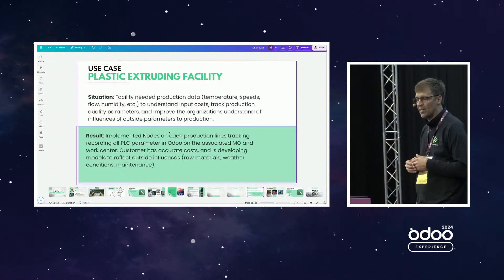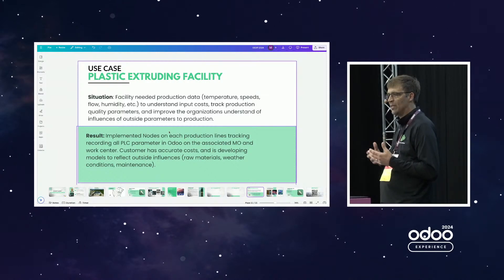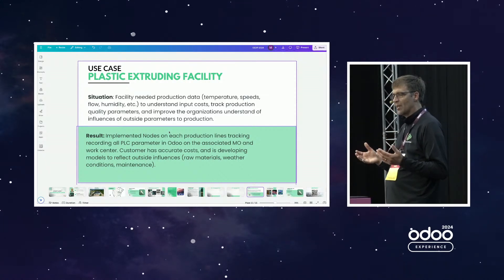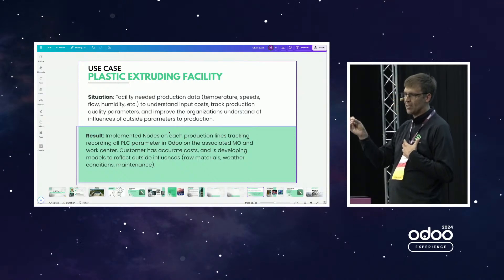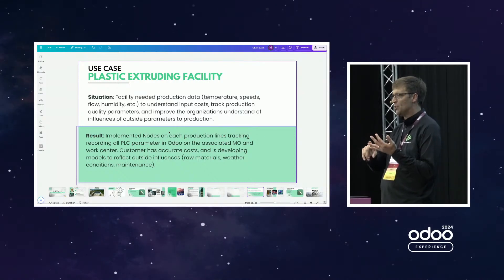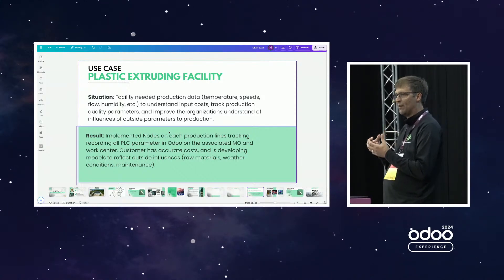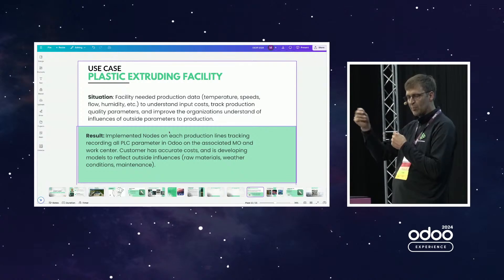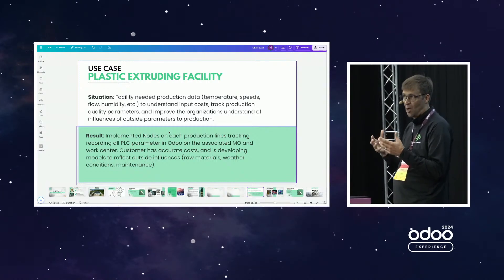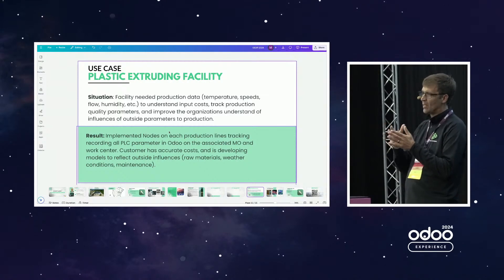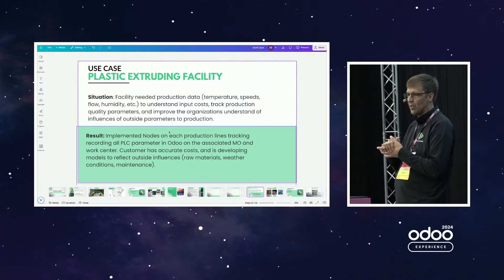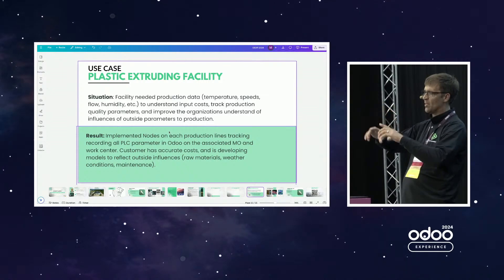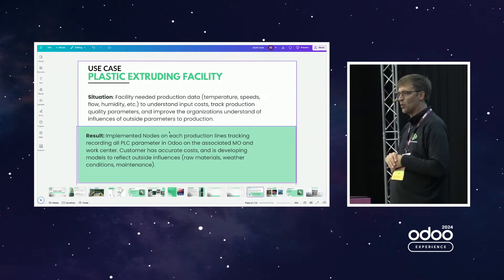A use case we've used this in: a manufacturer in Minneapolis has PLC lines running plastic extruders. They wanted to collect data from those plastic extruders around temperature, line speeds, all of that data — and they wanted it collected as part of the manufacturing orders and work orders in Odoo. We were able to go in, connect to the PLCs, grab all that data. We've been doing this for almost a year now where every five minutes we collect all of the data around their operations. Now they can look at a particular work order and see the temperature and line speeds, and they can also look at the work center over a day and see all the parameters of their production.